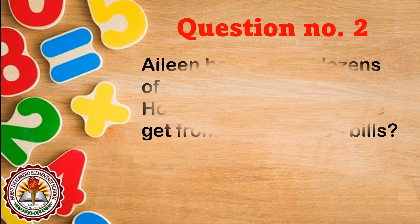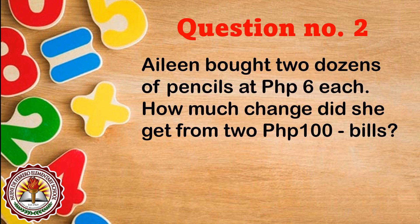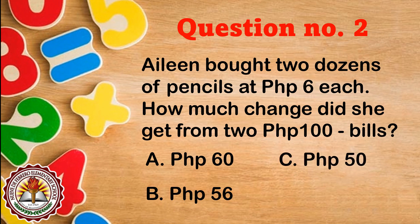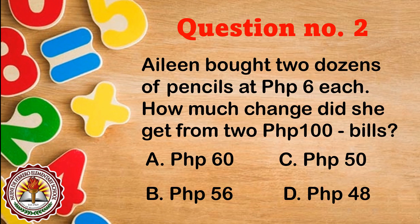Question number 2: Aileen bought 2 dozens of pencils at 6 pesos each. How much change did she get from two 100-peso bills? Is it A) 60 pesos, B) 56 pesos, C) 50 pesos, or D) 48 pesos? The correct answer is letter B, 56 pesos.